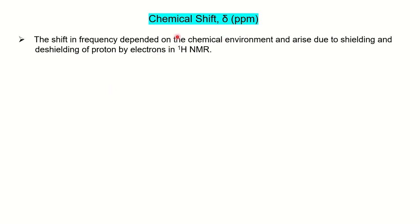Chemical shift is represented by the delta symbol and the unit is in ppm. The chemical shift depends on the chemical environment in the molecule and arises because of the shielding and deshielding of the protons by electrons in proton NMR. To understand this video, you should already have knowledge of shielding and deshielding mechanisms. If not, learn those first before proceeding with the chemical shift calculations.